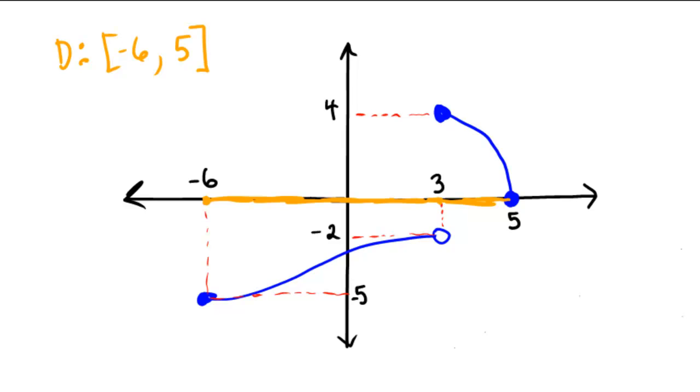On the y-axis, what happens though? Well, y gets as low as negative 5, and then it gets as high as negative 2 here. So it looks like the range would be from a low of negative 5 to a high of negative 2. Notice the bracket on the negative 5 and the parentheses on the negative 2.